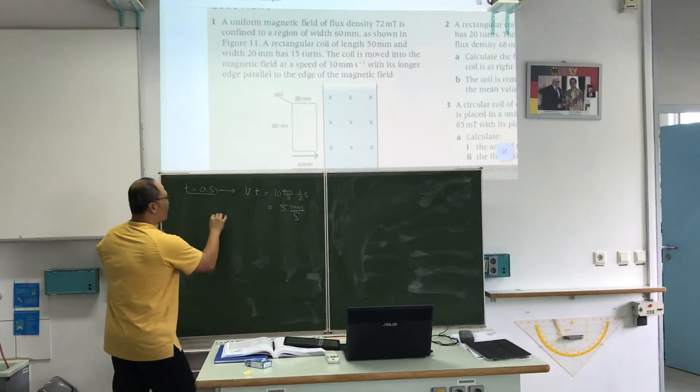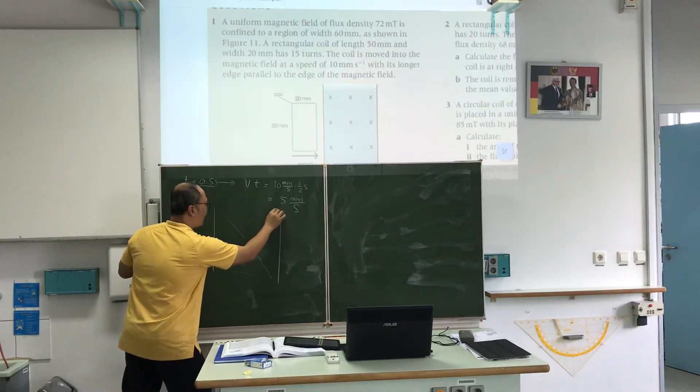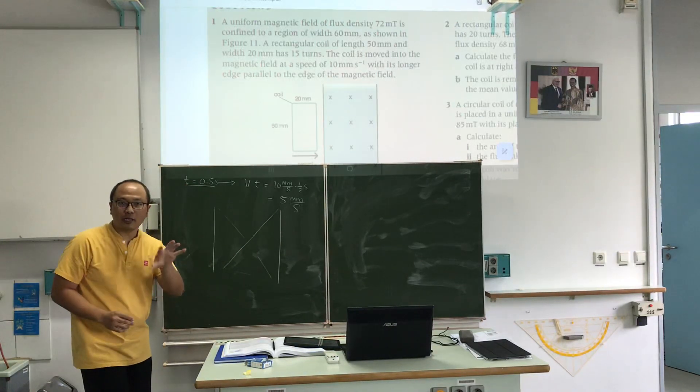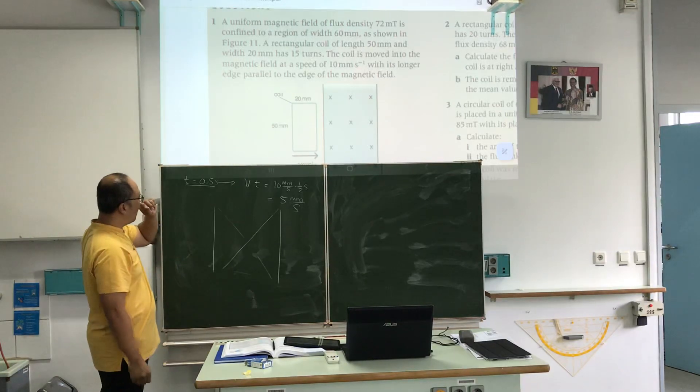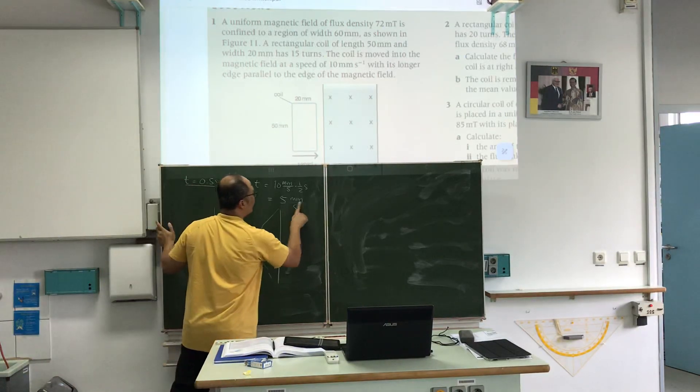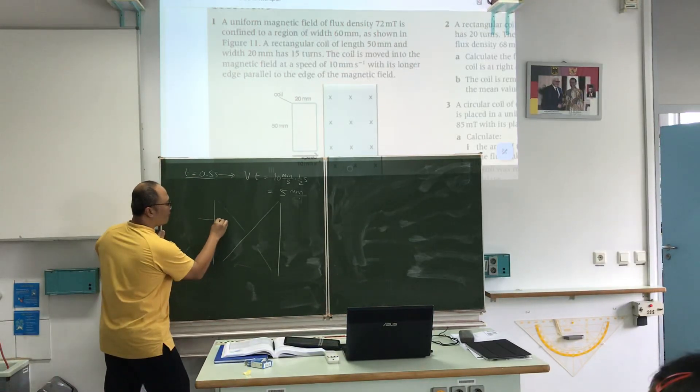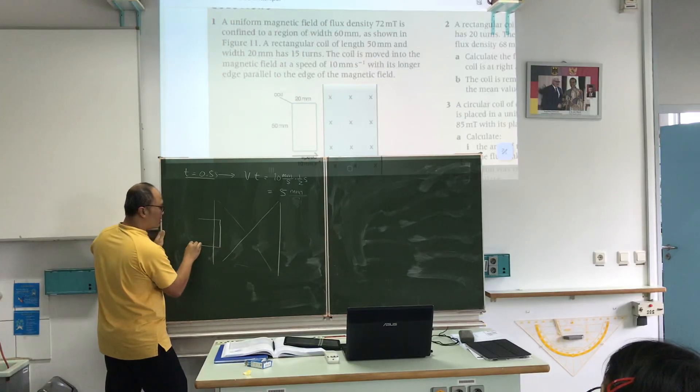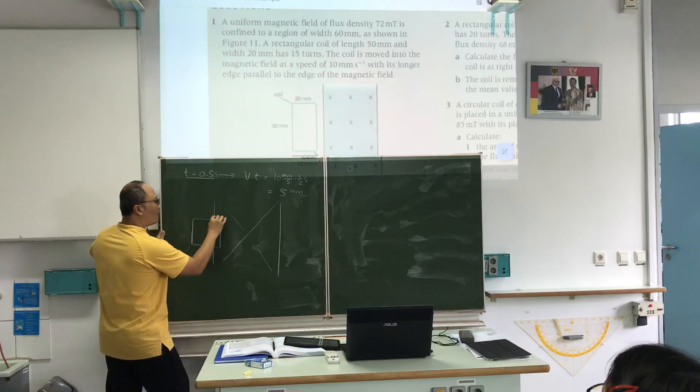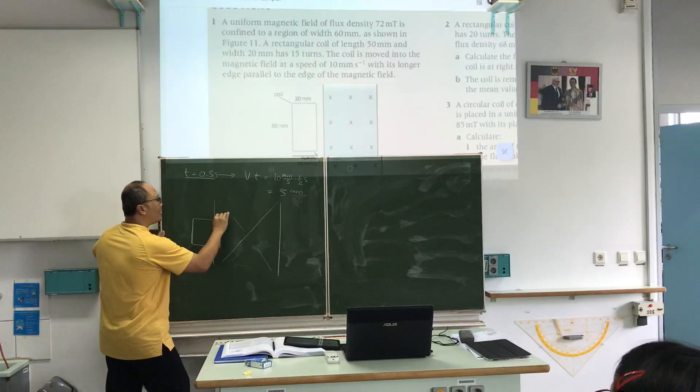Meaning, if this whole is magnetic field, how does it look like with the one inside? It means, what is inside this field? Only this, right? Yeah, 5 millimeter. Yes, only 5 millimeter is here, correct? Only 5 millimeter is here.